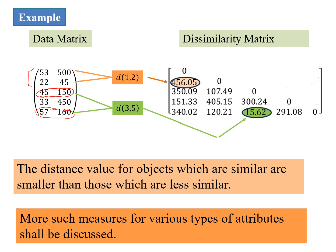When we look at the first and second data points, we can see the vast difference between the values of the first feature, 53 and 22, and the second one, 500 to 45. Now we can understand why we look at the dissimilarity matrix. Looking at this, we get an idea of how similar or dissimilar the data points would be. The distance value for objects which are similar are smaller than those which are less similar. Here 15.62 belongs to data points 3 and 5 which are very similar, so it is small, and this one is big.